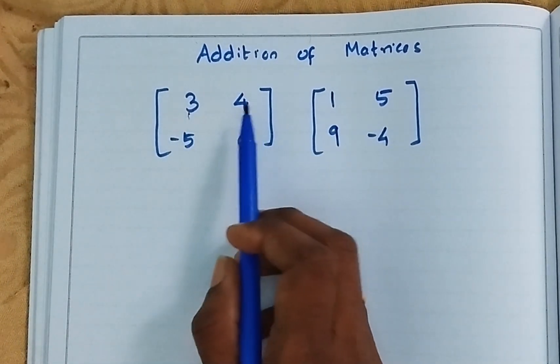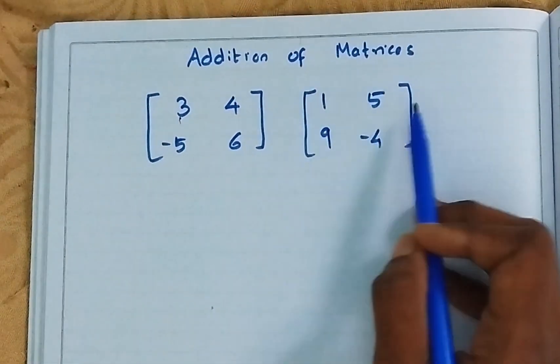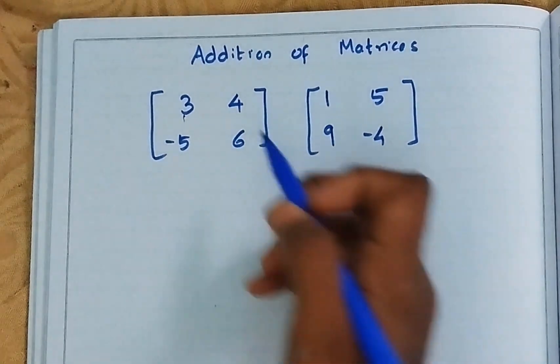You can see the order. Already I taught you order is RC. So how many rows? 2 and 2. Here also 2 and 2. So we can add.